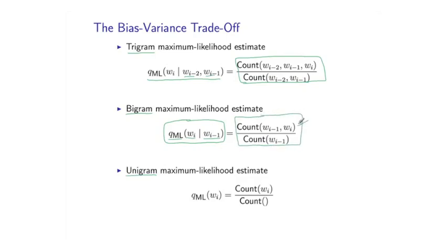And again, this is simply defined as a ratio of counts. On the numerator, I have now a bigram count. And on the denominator, I have a unigram count.